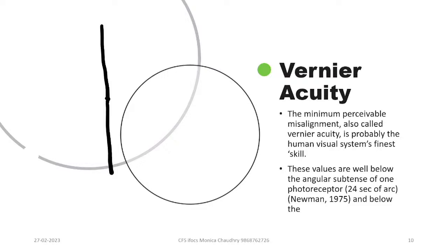Another important term is Vernier acuity — the minimum perceivable misalignment between two objects. It is probably one of the finest visual skills of the human eye. Two vertical lines are separated and the minimum separation the eye can perceive is called Vernier acuity, which is approximately 24 seconds of arc.